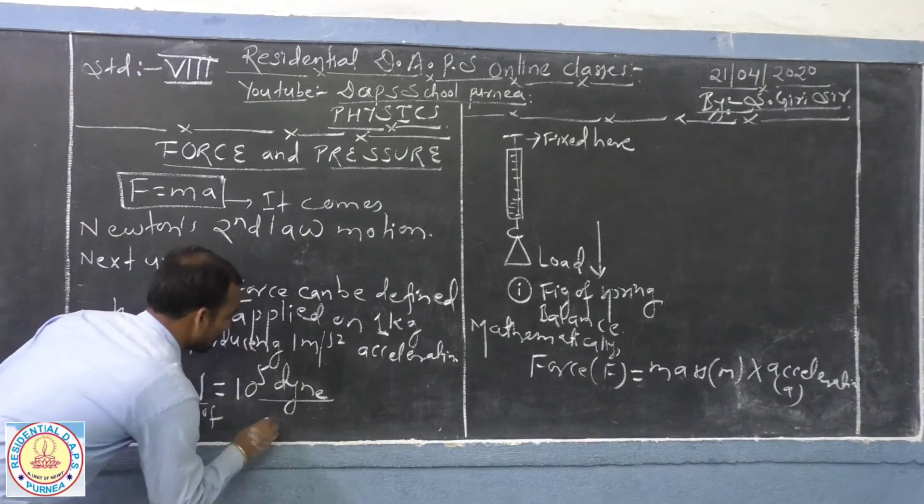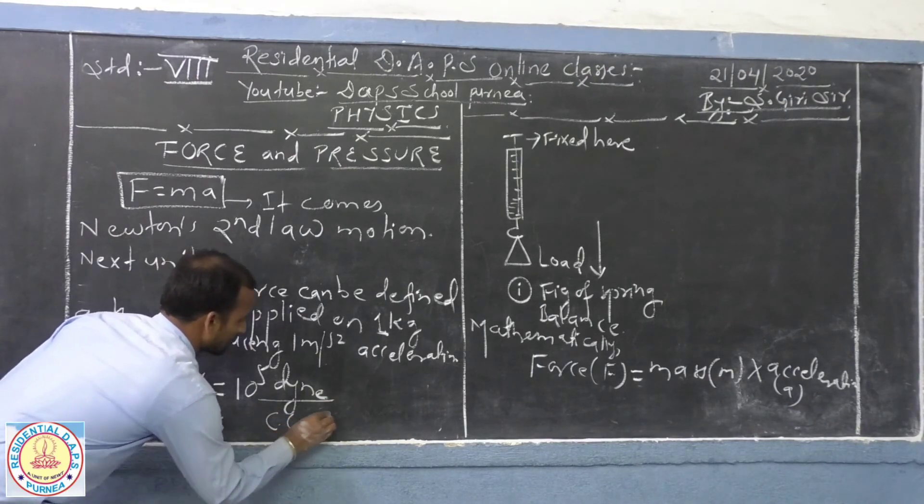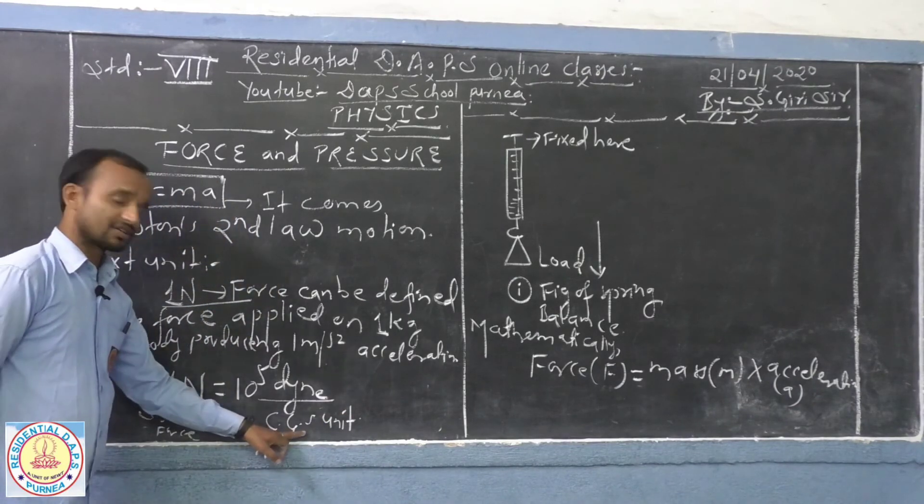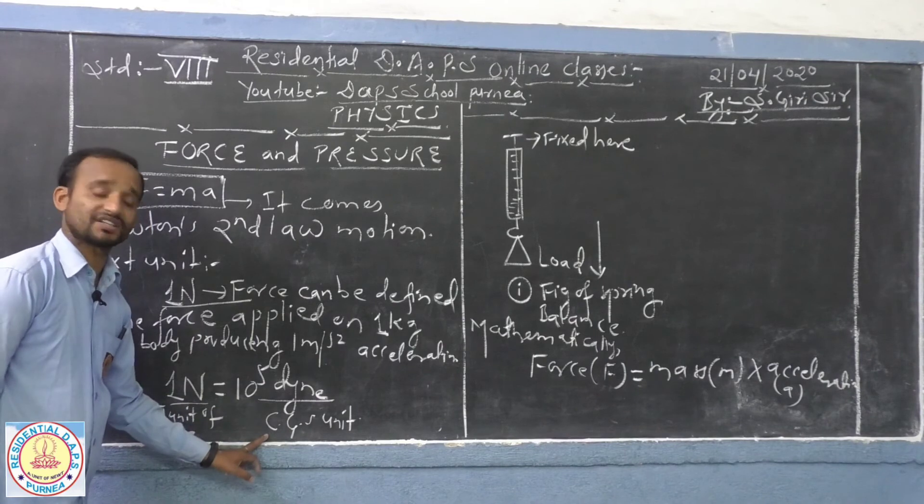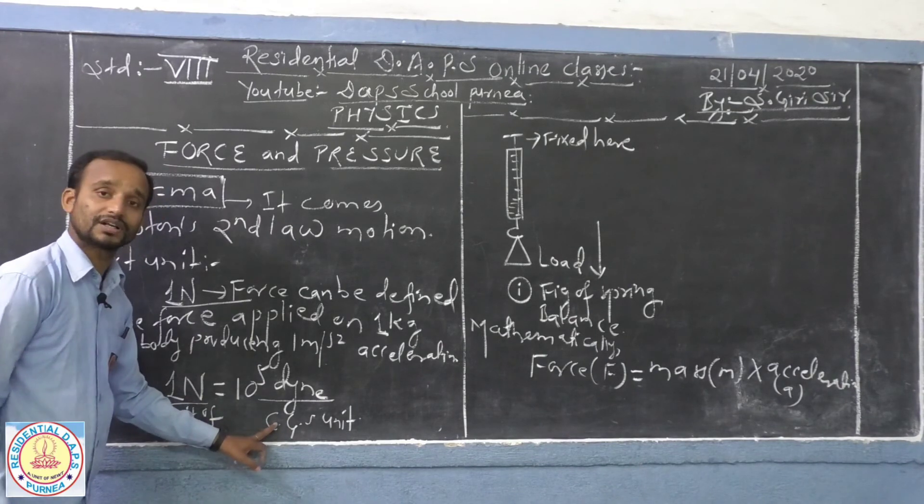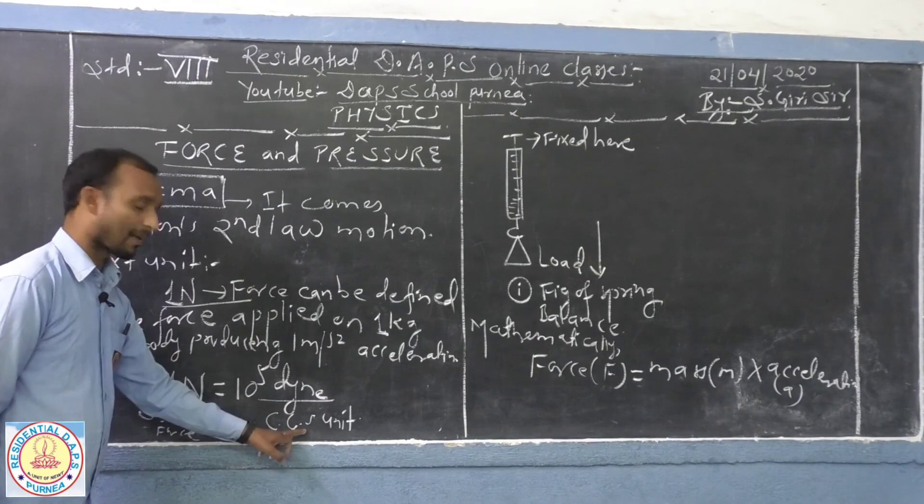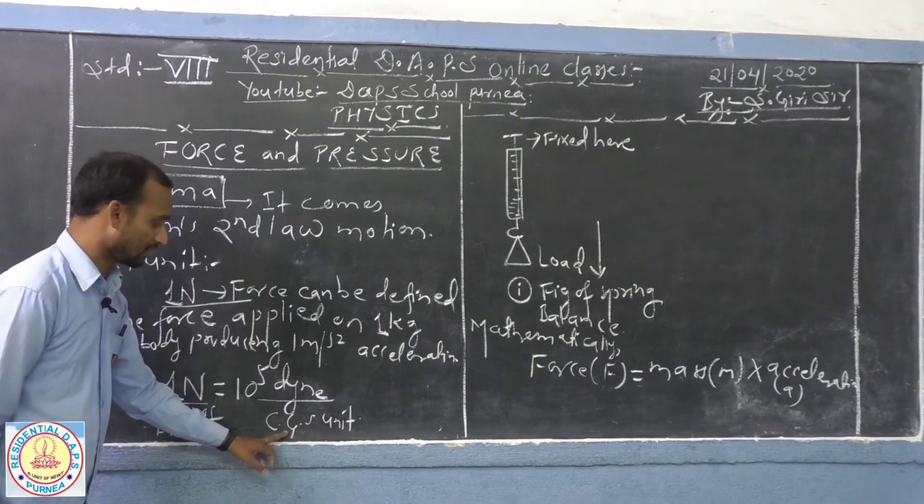And this is CGS unit. CGS unit is the system of measurement in which length is taken as centimeter, not in meter. Remember, length is taken as centimeter, mass in gram, not in kg, and time in second.